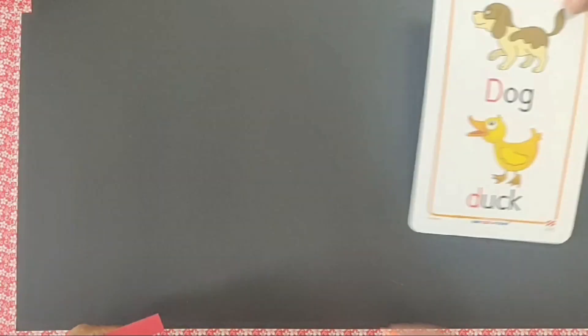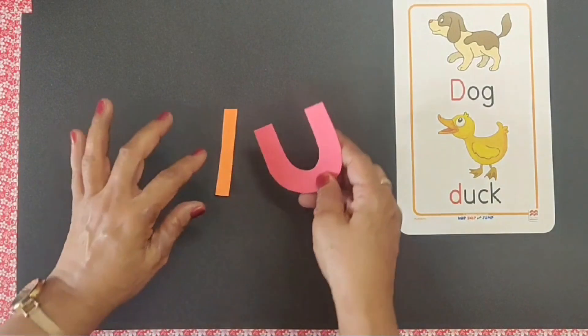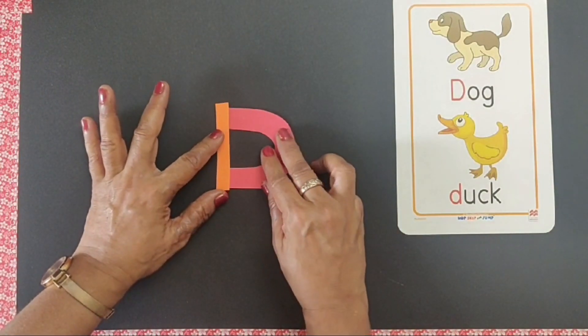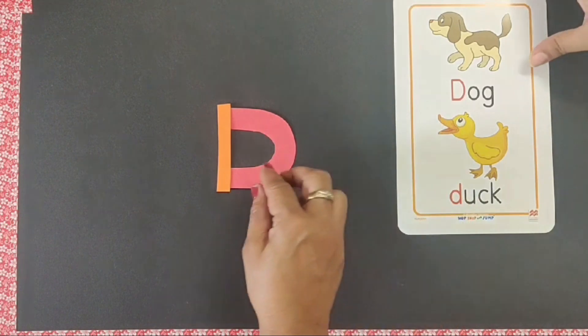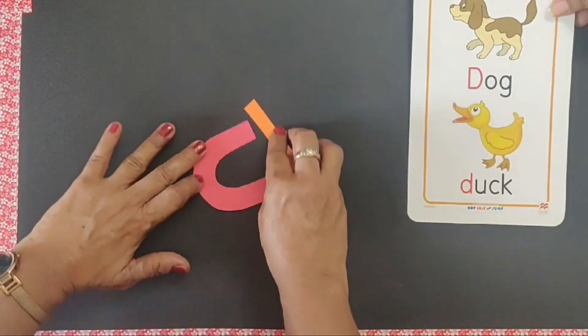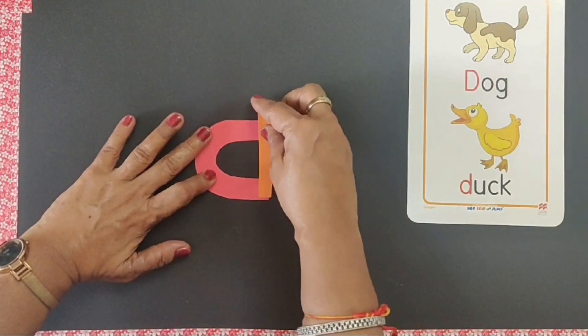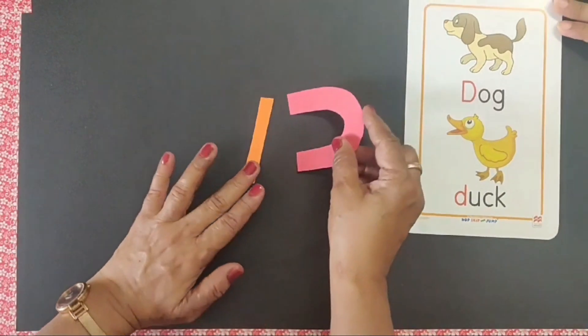Now with this bigger strip, you make D. Say D says duh, D for dog. Some children write it like this. So we can teach them that the curve will be on the right side.